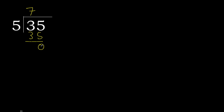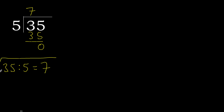0, and that is not a number to bring down, therefore finish it. 35 divided by 5 is 7. Finish.